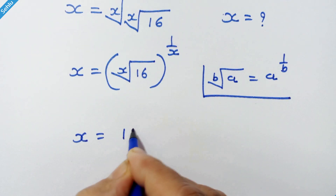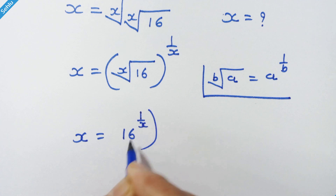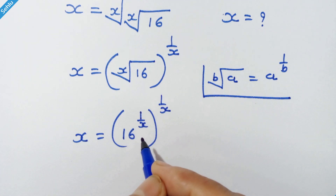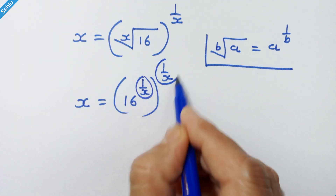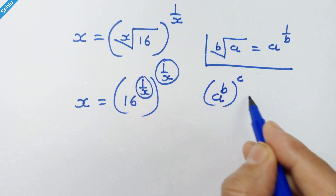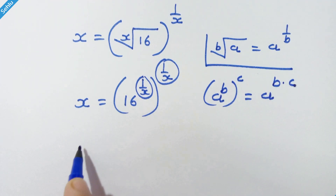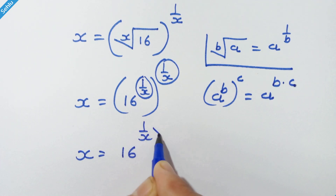Now x is equal to 16 raised to 1 upon x, whole raised to 1 upon x. Again we have applied the same rule here. Now let's multiply the exponents, because if we have a raised to b, whole raised to c, then we can write a raised to b into c. So our next step will be x is equal to 16 raised to 1 upon x into 1 upon x.